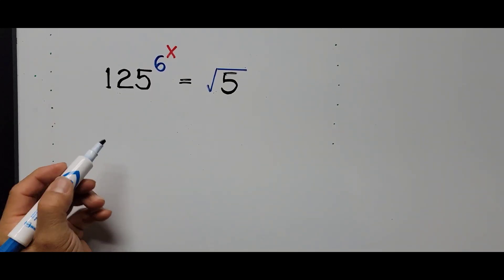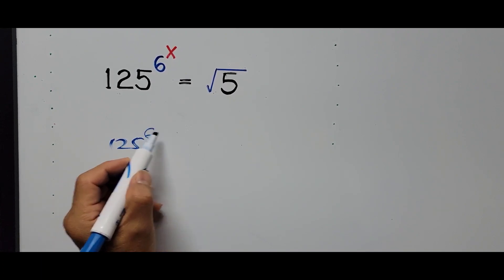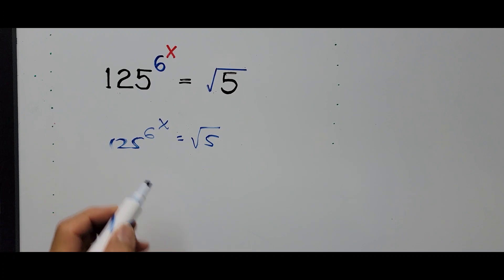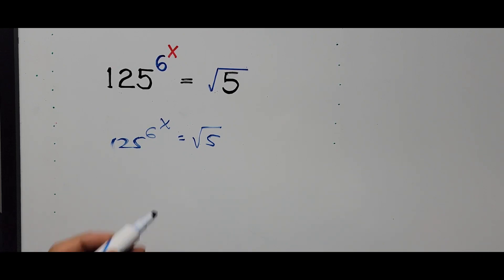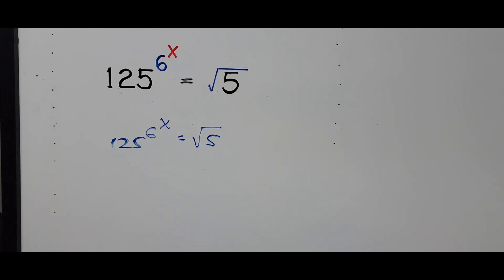So 125 to the 6th power, to the power of x, equals the square root of 5. The first thing to do in solving this kind of equation is to find a common base. The left side of the equation has base 125, and the other side is the square root of 5, so we need to find the common base.